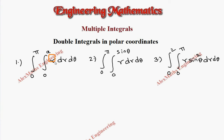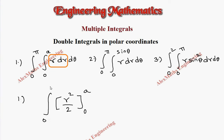Integration of r is r² / 2. Then we have to apply the limit which is 0 to a, and we have another integral 0 to pi with respect to dθ. When we apply the limit this will become a² / 2 minus 0 / 2.